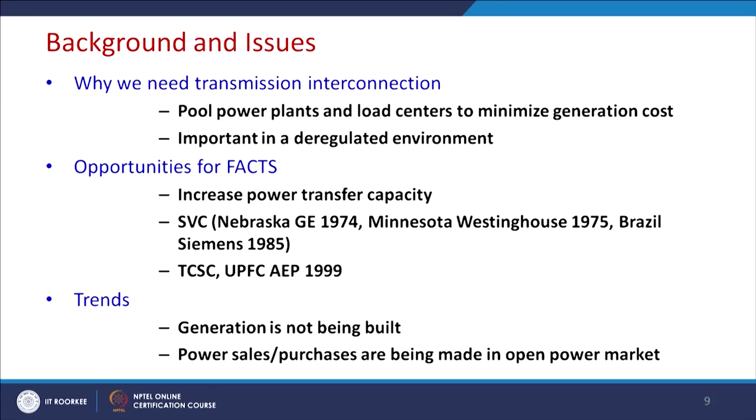Let us understand the background and issues related to FACTS devices. Why do we need transmission interconnections? To pool power plants and load centers to minimize generation cost. For example, over the past 20 years, load centers are in the southern part of India, while most generation is based on fossil fuel available in the eastern part. FACTS enables us to transmit power from generating regions to load centers. In a deregulated environment, the opportunity for FACTS increases the power transfer capability of the line.